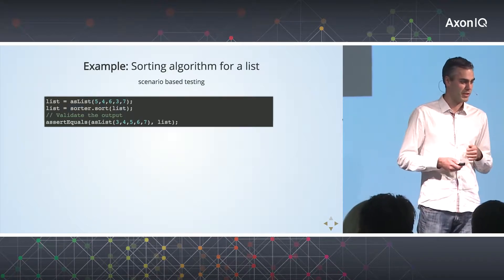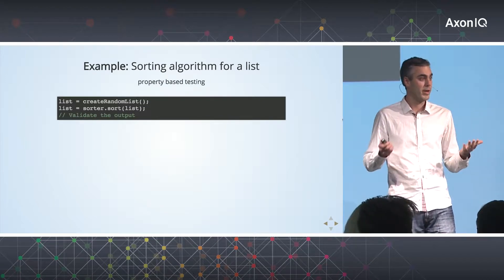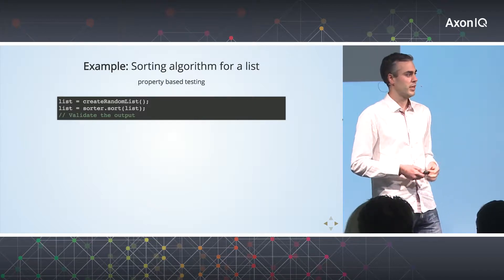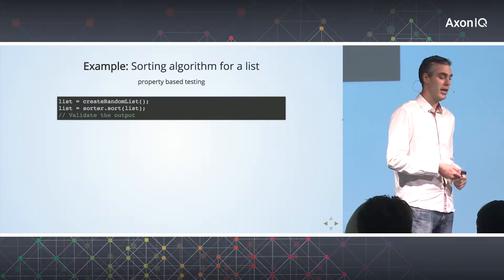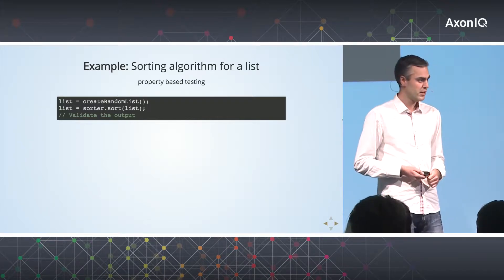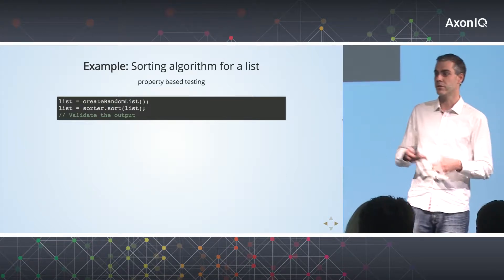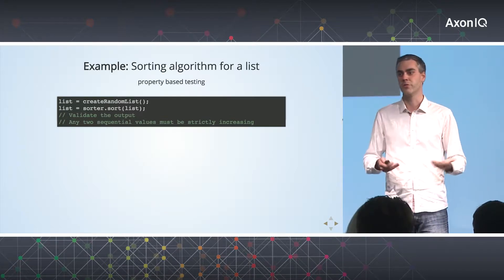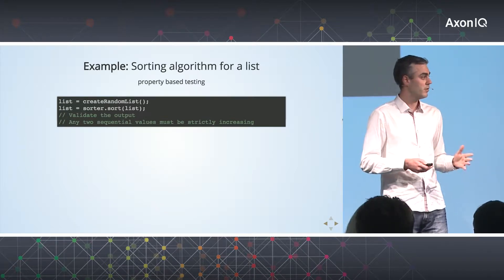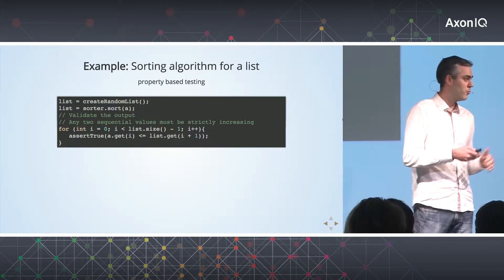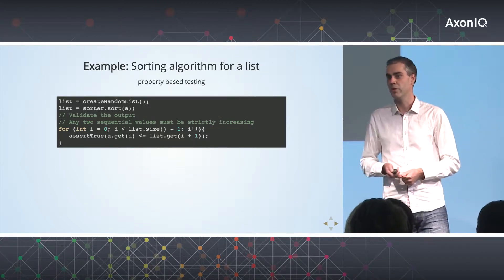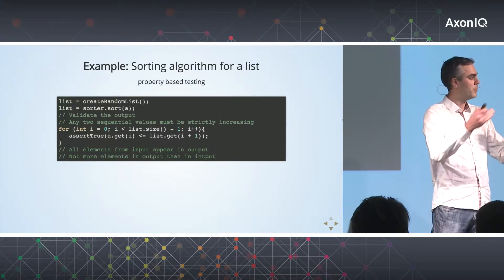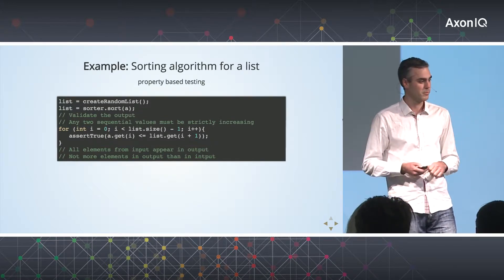Now we're going to do this using property-based testing. We start with a random list and apply the business logic. How do we validate the output in this case? We cannot create a list that is the correct outcome and then compare the two, because we don't know what the input looks like. But there are some properties of the sorted list that we know should hold. For example, if you look at two consecutive values from the list, they must be strictly increasing, or else the list would not be sorted. So we can implement that check.